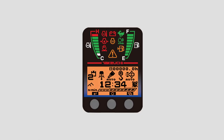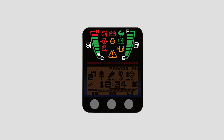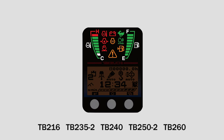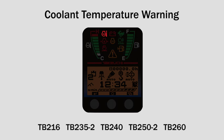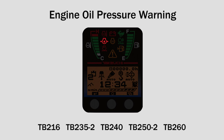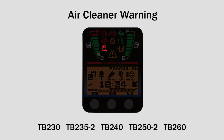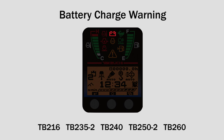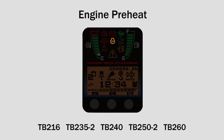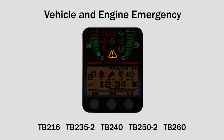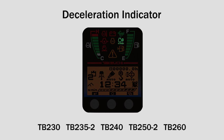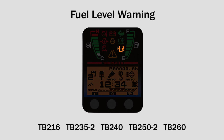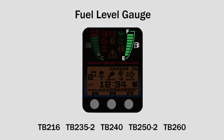Located at the top of the monitor are the following warning lights and gauges, which will vary slightly by model: coolant temperature gauge, coolant temperature warning, engine oil pressure warning, air cleaner warning, battery charge warning, engine preheat, vehicle and engine emergency, travel speed indicator, deceleration indicator, fuel level warning, and fuel level gauge.